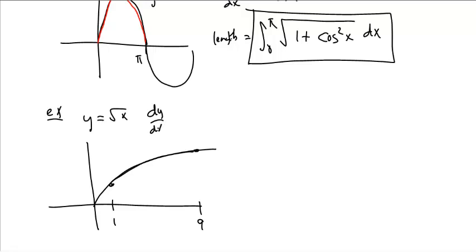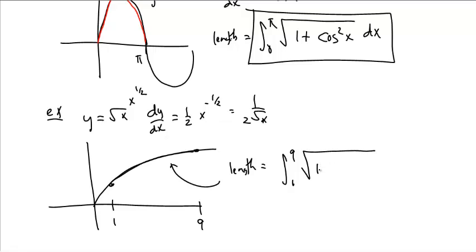Let's see. dy dx is, that is what, x to the 1 half. So, it's 1 half x to the minus 1 half, or 1 over 2 square root of x. So, that length is the integral from 1 to 9 of square root of 1 plus 1 over 2 root x squared dx,